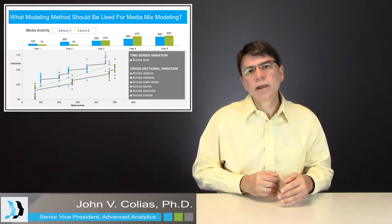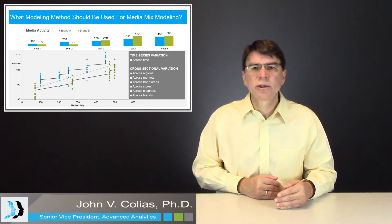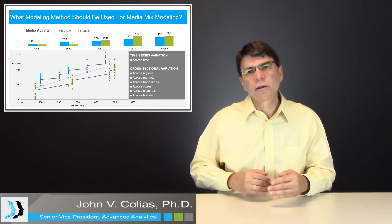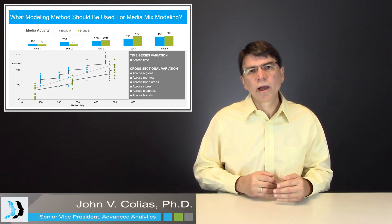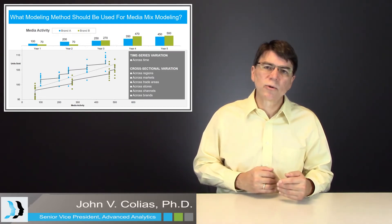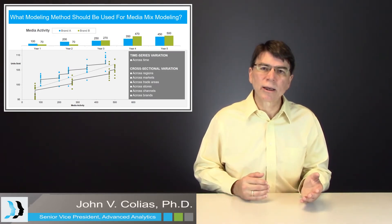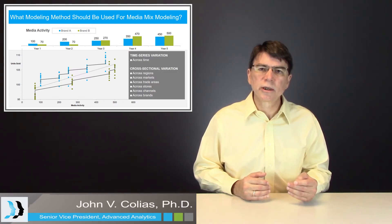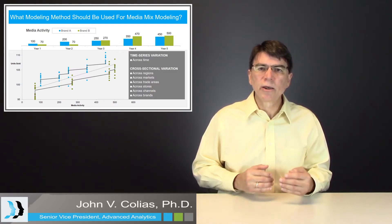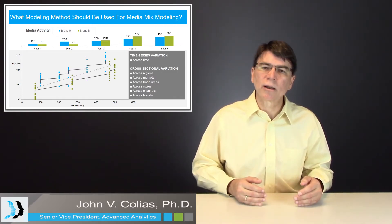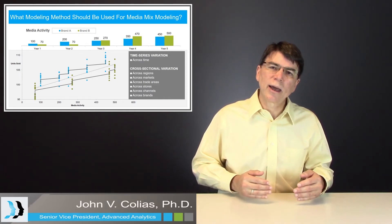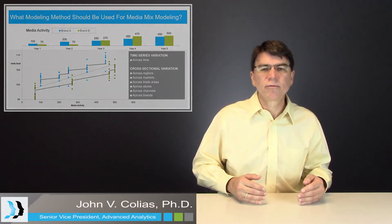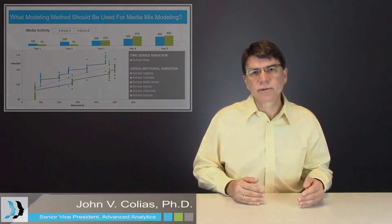So the bottom line is we need to decompose these two elements: the time series element and the cross-sectional element. The way that we do that is to apply a method called mixed modeling. It's the most common method used to do this in media mix modeling, and by using mixed modeling, we can get a more accurate measure of the impact of media activity on sales. Thank you.